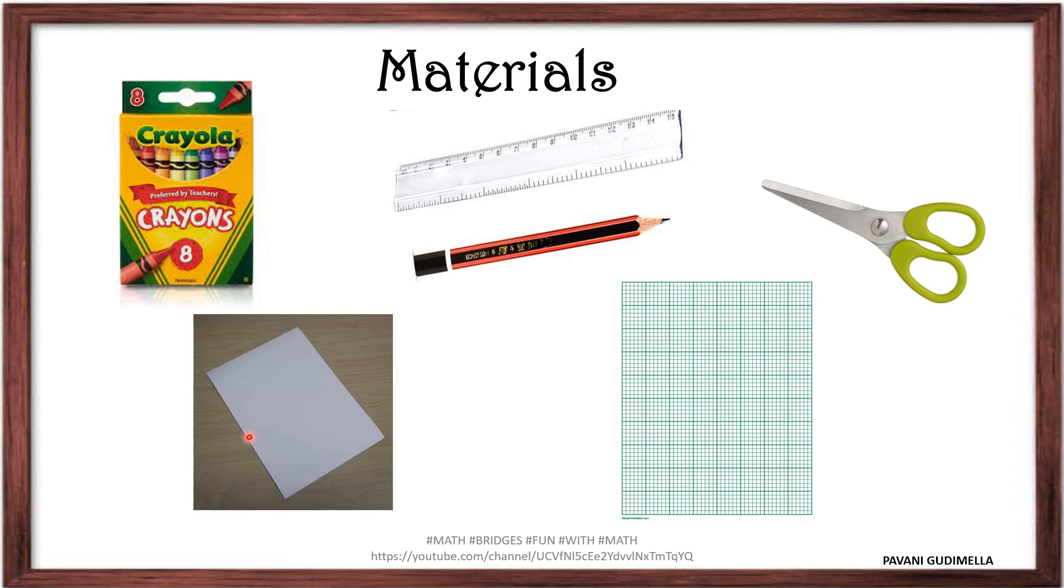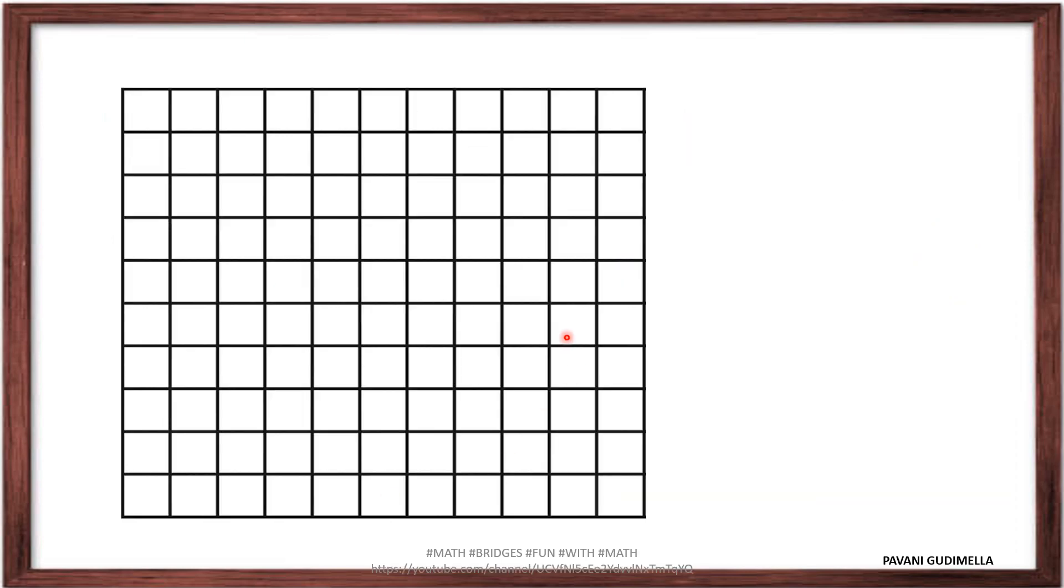Or else you can use a graph paper also. Keep these things ready. Now take an A4 size paper. Using a ruler, you draw the grid like this. It is 10 by 11, 10 rows and 11 columns.